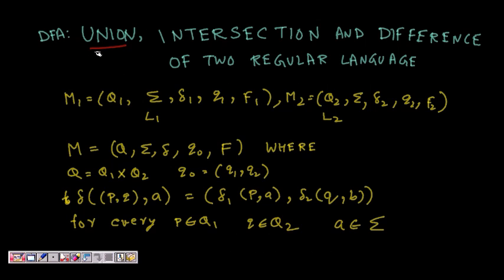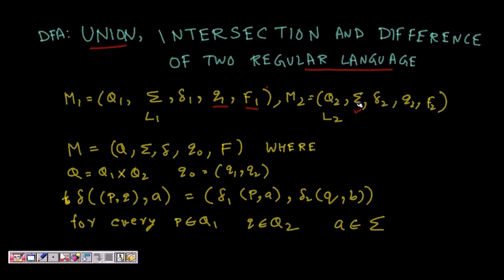In this lecture we will learn about the DFA for the union, intersection, and difference of two regular languages. Our first language L1 has automaton with states Q1, alphabet sigma, delta 1 as transition function, q1 as start state, and F1 as the set of final states. M2 has states Q2, the same alphabet, transition function delta 2, q2 as start state, and F2 as the set of final states, representing language L2.